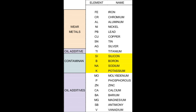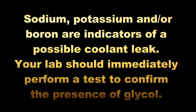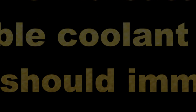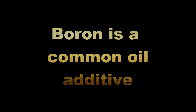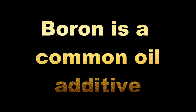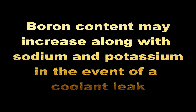Sodium and/or potassium and/or boron are potential indicators of the presence of coolant contamination. When these elements are present in abundant quantities, the lab will typically perform an additional chemical test to confirm the presence of glycol. Boron, however, is very commonly seen as an oil additive and is not a definite indicator of the presence of coolant, though increases in boron may be seen along with elevated values of sodium and potassium that are associated with a coolant leak.